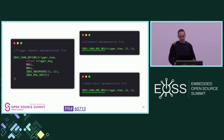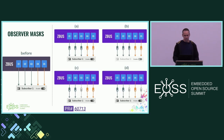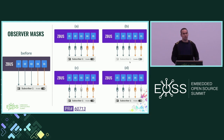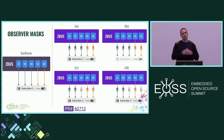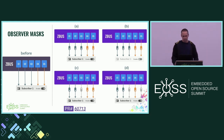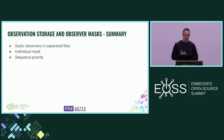For those trying to avoid using a heap, this is a really good thing. Another benefit is that before we just had enablement on the observer level, but now we can disable observations individually. You can disable the entire subscriber as a whole, or just one observation. Both static and runtime observers can be disabled on the fly at runtime. So you can keep your subscriber enabled and just disable specific channels you don't want to receive notifications from at that time. In summary: static observers in separate files, individual masks, and a sequence priority for notification ordering.